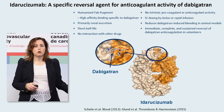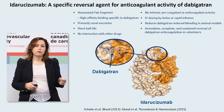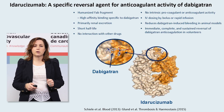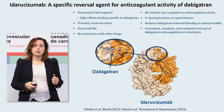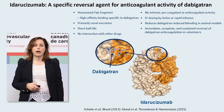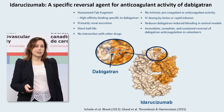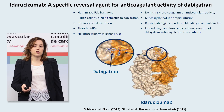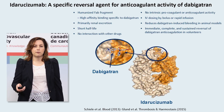Idarucizumab is a humanized antibody fragment with 350-fold greater affinity for dabigatran than dabigatran has for thrombin. It works without obvious interaction with other drugs and without obvious procoagulant effects. In animal models and human volunteers, idarucizumab has demonstrated immediate, complete, and sustained reversal of the anticoagulation effect of dabigatran.